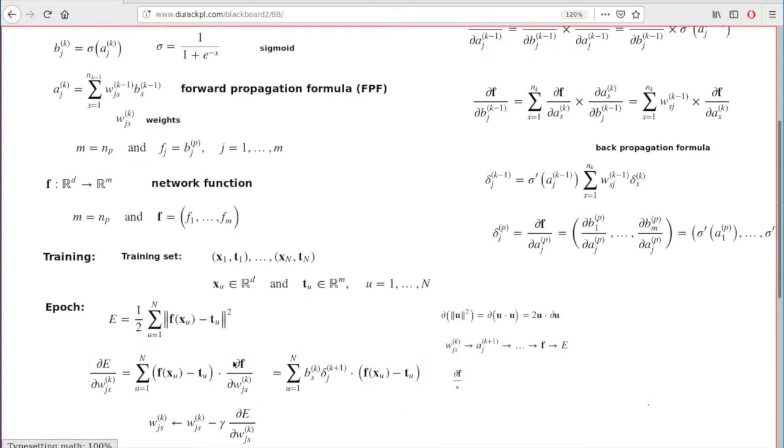If you attempt to find the f derivative with respect to that weight, that will be the f derivative with respect to the a function to the right, the immediate function to the right, and then times the derivative of this a function with respect to that weight. This factor is exactly the b term from the forward propagation formula, and this factor is the delta functions we found in the back propagation formula.